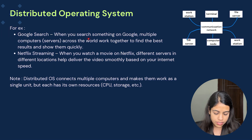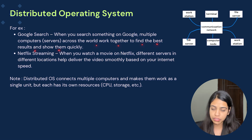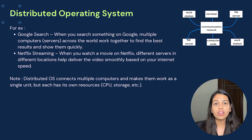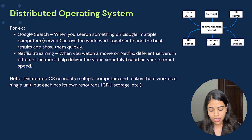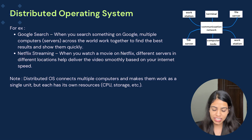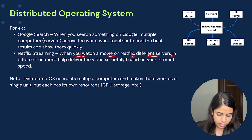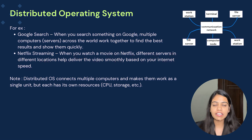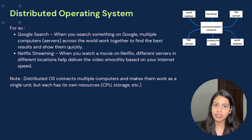For example, Google Search: when you search something on Google, multiple computers or servers across the world work together to find the best result and show them quickly. Everyone gets results in a faster duration of time because Google's servers are spread across the world. Coming to Netflix streaming: when you watch a movie on Netflix, different servers in different locations help to deliver the video smoothly based on your internet speed, delivering high quality content.